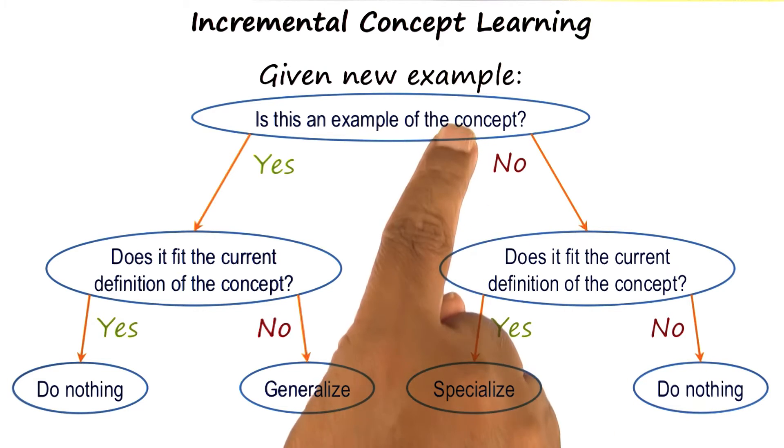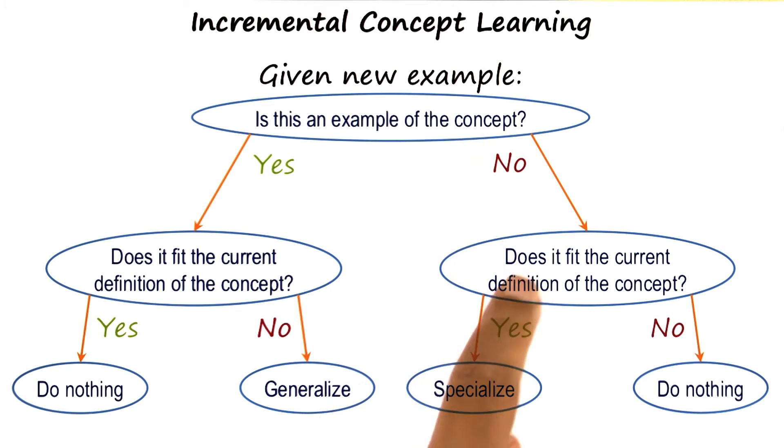On the other hand, if the example is a negative instance, and the current definition does cover it, then we want to refine our current definition to rule it out. So we'll specialize our current definition.